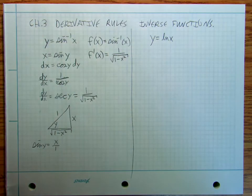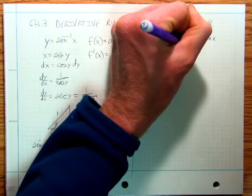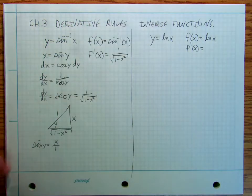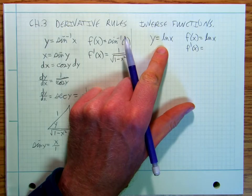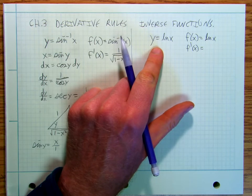We haven't done this one yet. y equals ln of x. Or if I say f of x equals ln of x, what does f prime of x look like? Well, if we take the inverse of both sides, if we take the inverse function of that, what's the inverse of ln?